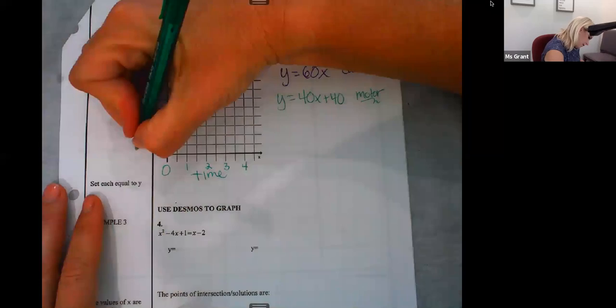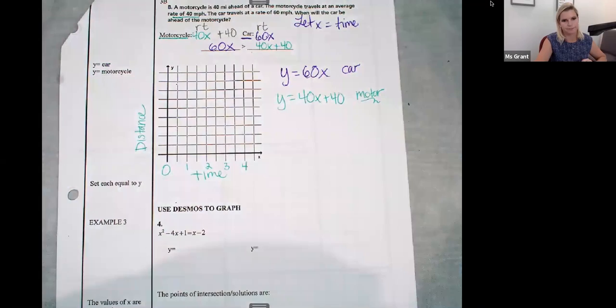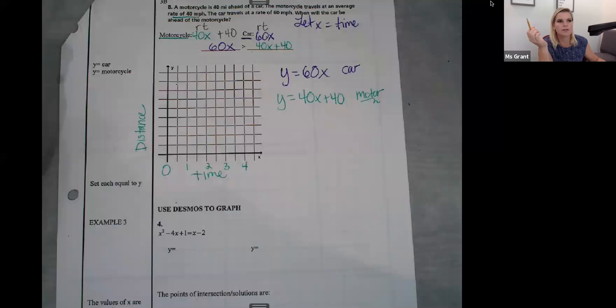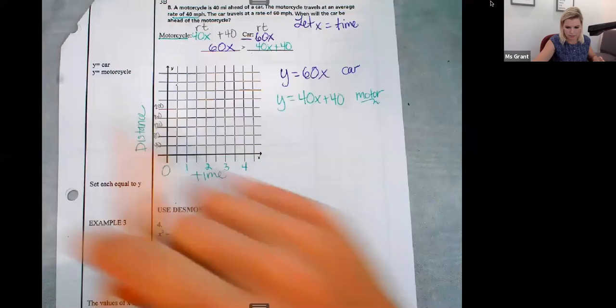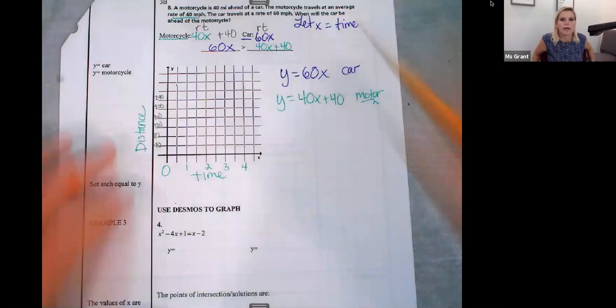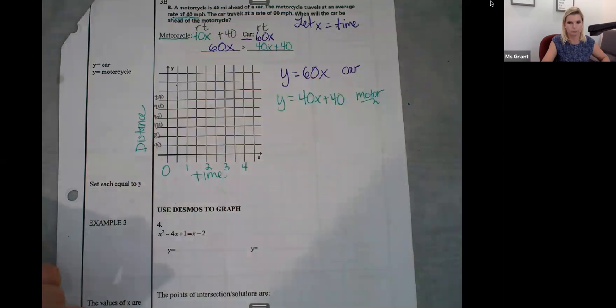My distance is here. I've got to get all the way, I mean, 40, the motorcycle starts 40 miles away. And every hour it's 40, 40, 40, 40. So I need to really get up high. So I'm going to do, how about like, I could do by 40s. 40, 80, 120, 160, 200, 240. And now I need to graph both.